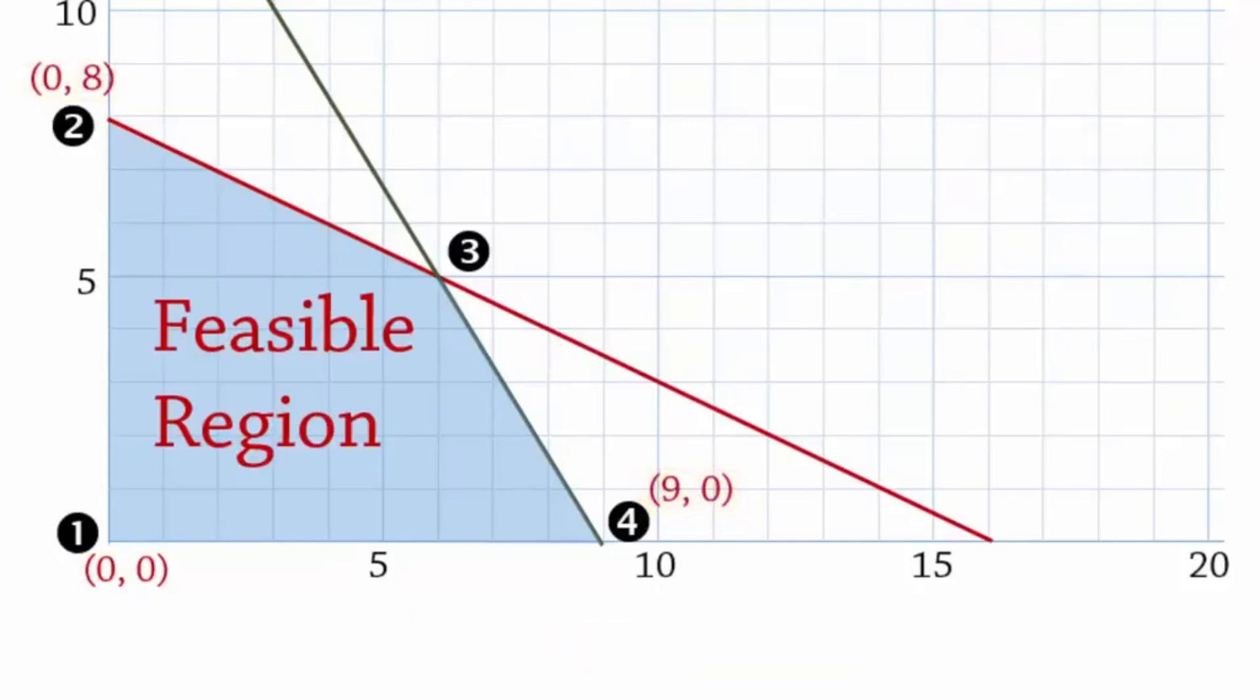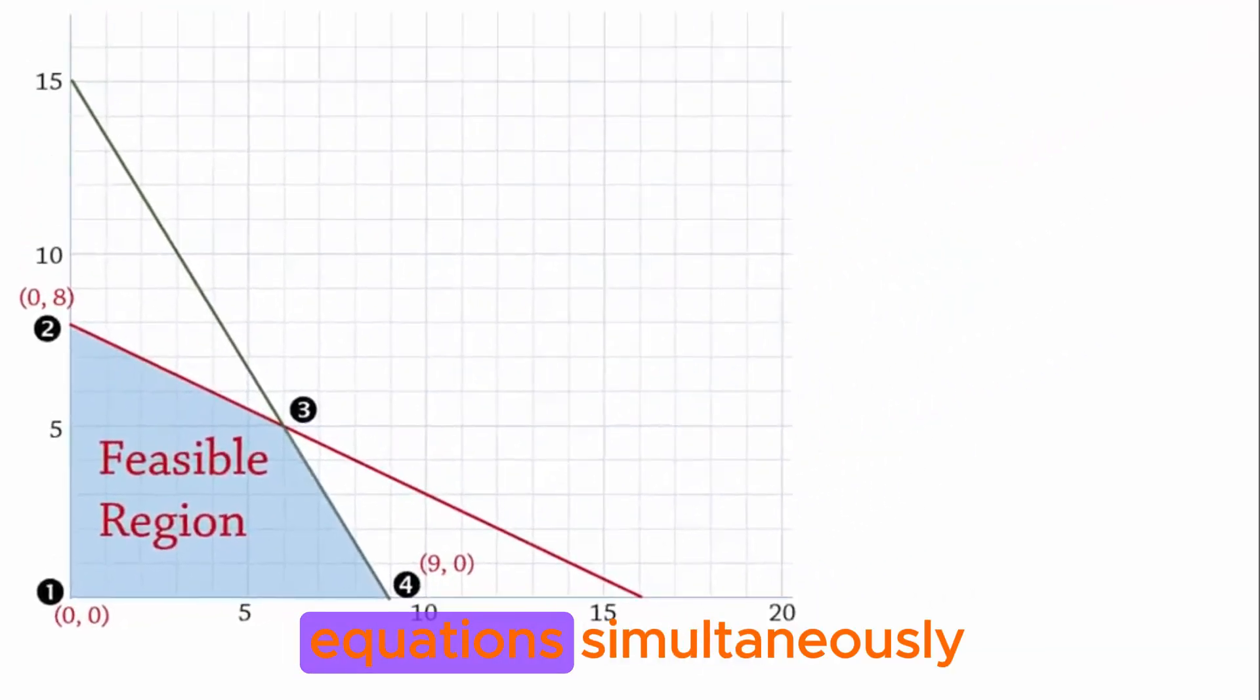For corner point 3, we can see that the coordinates are 6 and 5 by eyeballing. That is, looking at it very closely. But eyeballing is not usually the best way to go when finding the intersection of two lines, especially when manually drawing the graph. So, let's see a way to solve the two equations simultaneously to determine the actual coordinates.